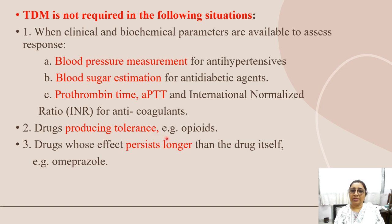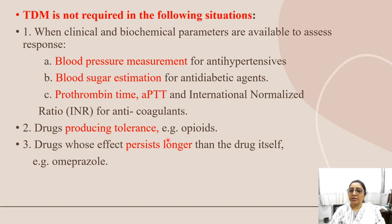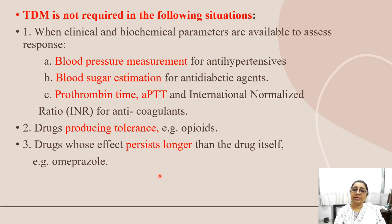There are certain situations where TDM is not required. When clinical and chemical parameters are available to assess the drug response, TDM is not needed because it is a costly procedure. Examples include blood pressure monitoring for anti-hypertensive drugs, blood sugar estimation for anti-diabetic agents, and prothrombin time, APTT, and international normalization ratio for anti-coagulant drugs. TDM is also not required for drugs producing tolerance, like opioids, or drugs whose effect persists longer than the drug itself, like omeprazole.